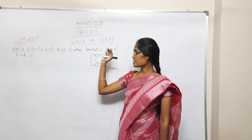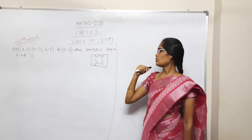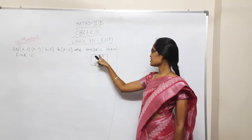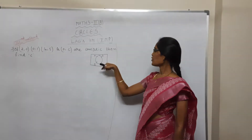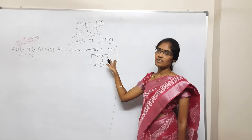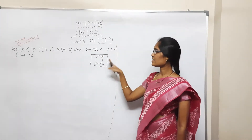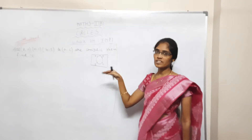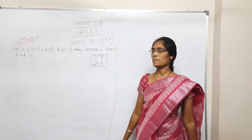The Third Model is Concyclic. So what is Concyclic? One or more points lying on the same circle is called Concyclic. If the points are Concyclic, then find the value of C.